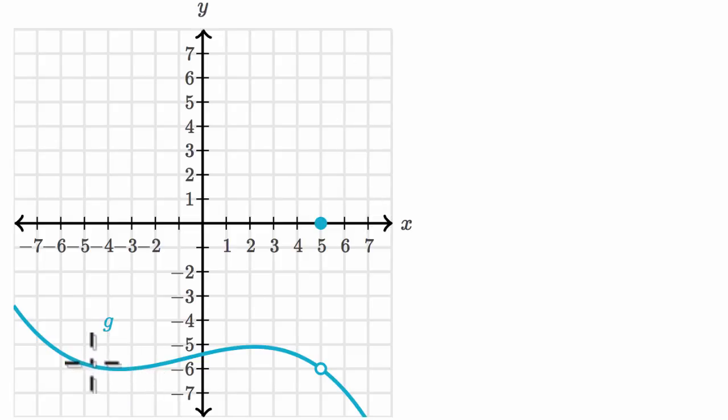So we have the graph of y equals g of x right over here, and I want to think about what is the limit as x approaches five of g of x.